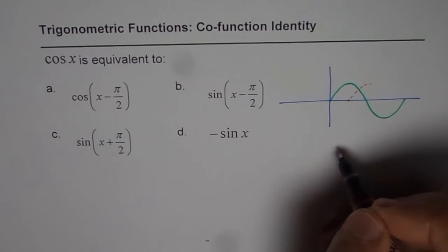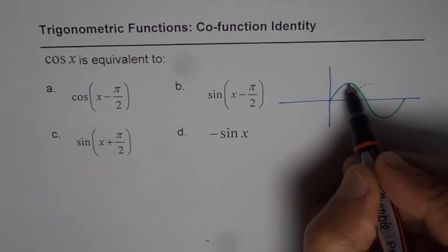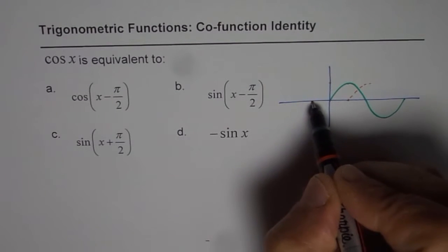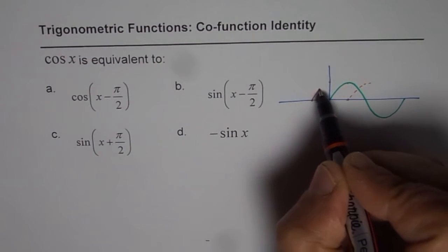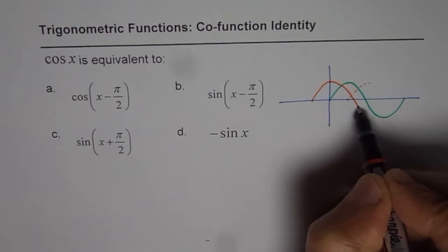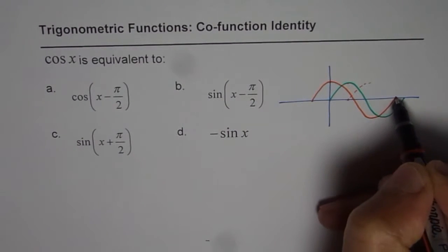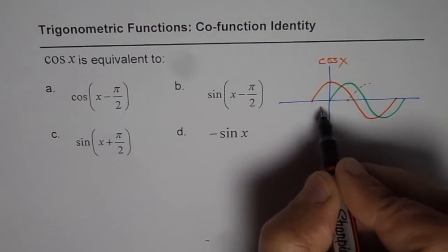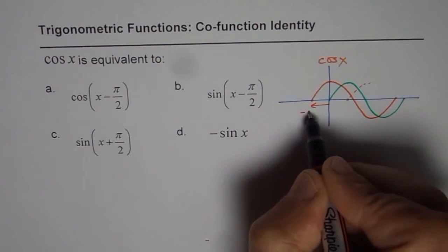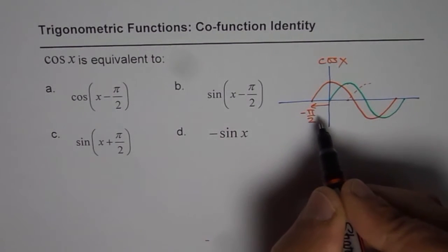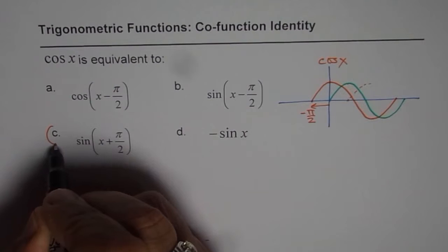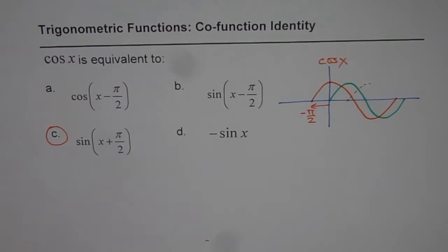be moving the wave horizontally π/2 units to the right. That's not the cosine function. The cosine function starts with a maximum, so I have to move the wave π/2 units to the left. If I do this, I get cos x. Moving the sine function left by π/2 results in the cosine function, so option C is correct. That's one way of looking at it. The other way